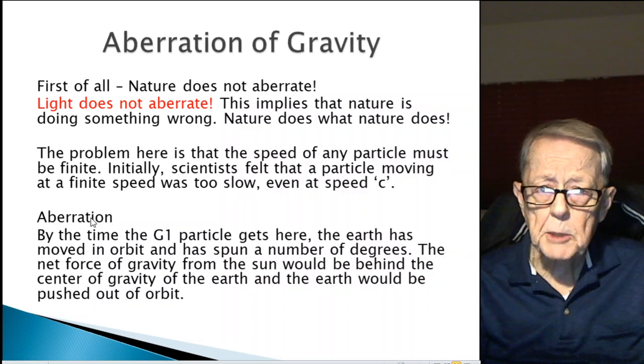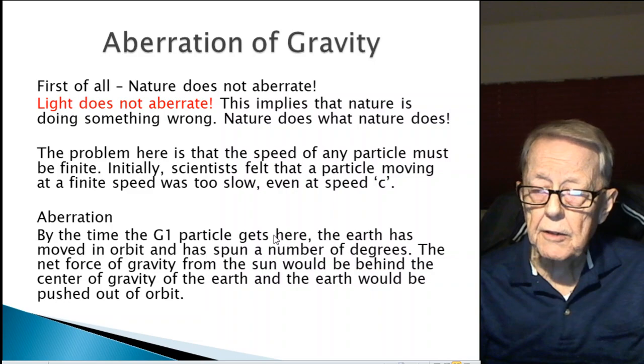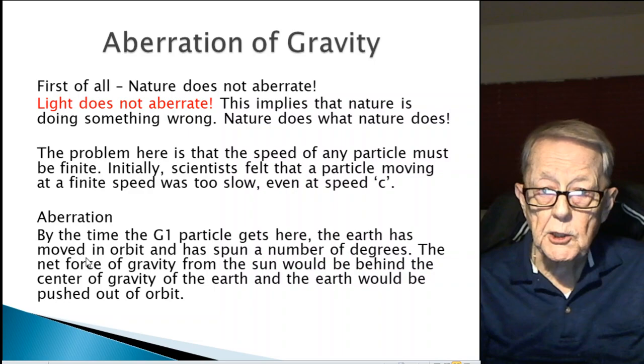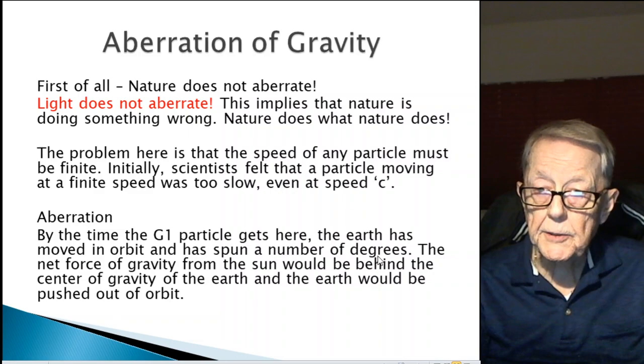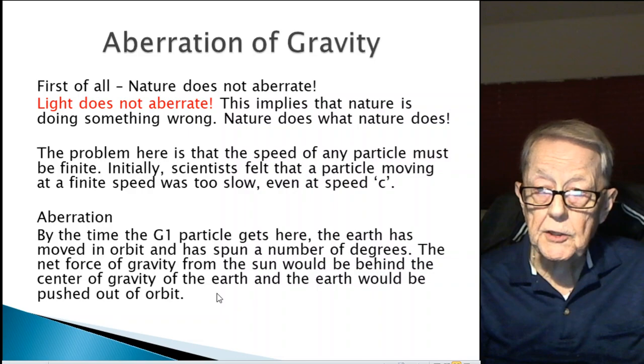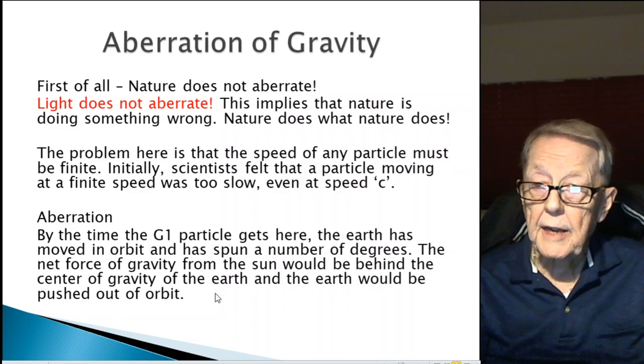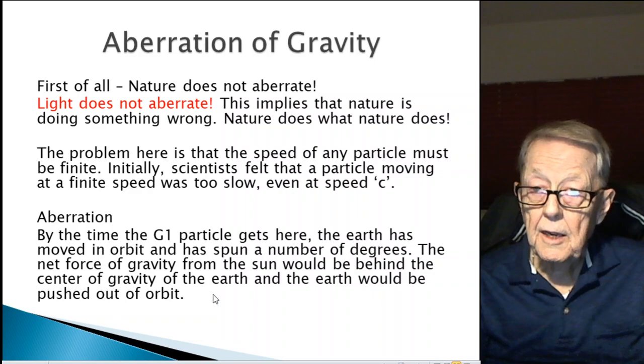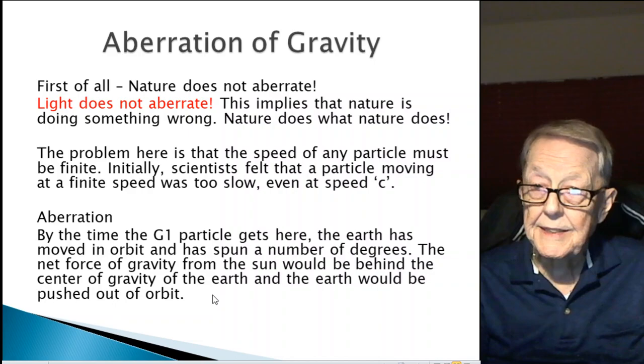Aberration. This is kind of an explanation of aberration. By the time the G1 particle gets here, as it comes through the sun to the earth, it has, or the earth has moved in orbit and has spun a number of degrees. The net force of gravity from the sun would be behind the center of gravity of the earth, and the earth would be pushed out of orbit. It's exactly what they were saying, that this Lesage theory of gravity, or the TPM model I'm using, cannot have the speed of gravity at sea because the forces of gravity wouldn't line up the way they see it line up.